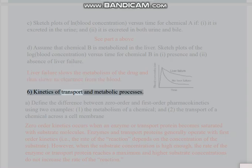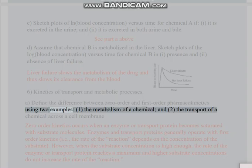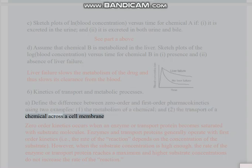Problem 6: Kinetics of transport and metabolic processes. Part A: Define the difference between zero-order and first-order pharmacokinetics using two examples: (1) the metabolism of a chemical, and (2) the transport of a chemical across a cell membrane.